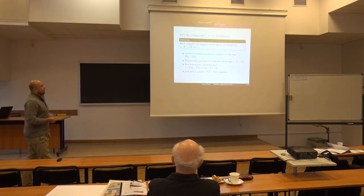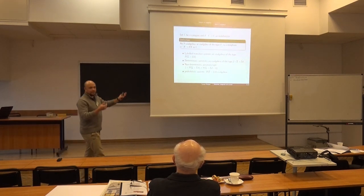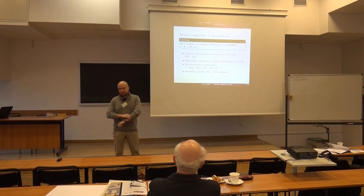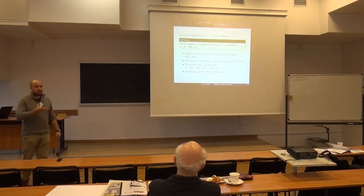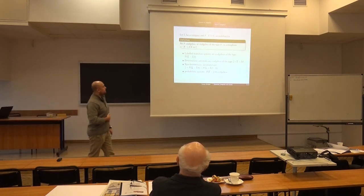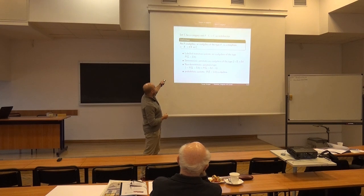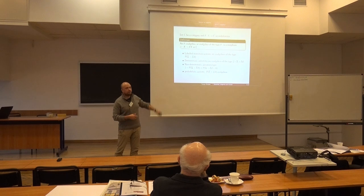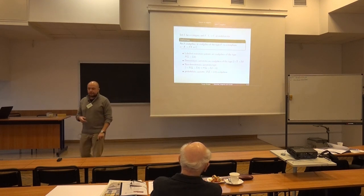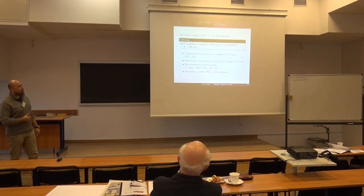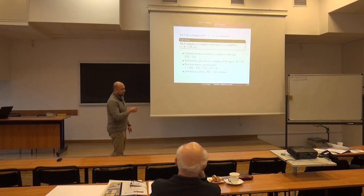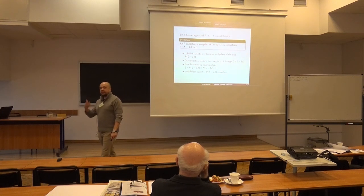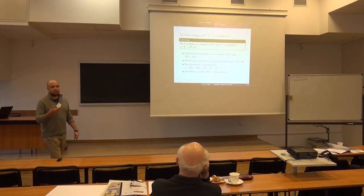So let's start with basic category theory. We start with a category C and a functor F on C. An F co-algebra is simply a morphism in C going from X to F(X). That's it, basically — there's nothing to it.